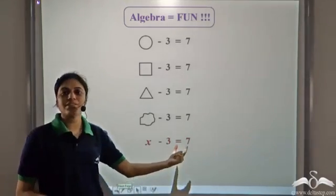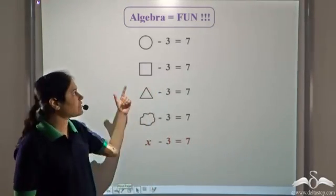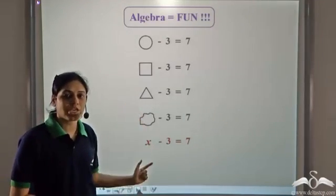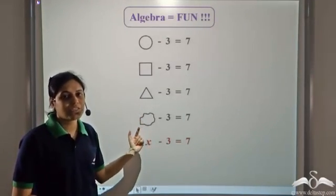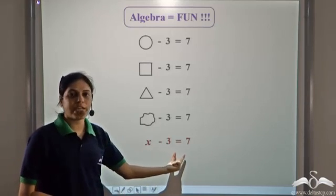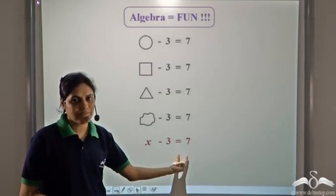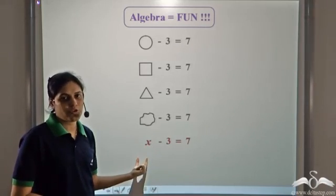So using letters in place of shapes make things easier. Writing these shapes or speaking these shapes every time is difficult. So we can use letters, and we can write x minus three is equal to seven. And what will be the value of x?